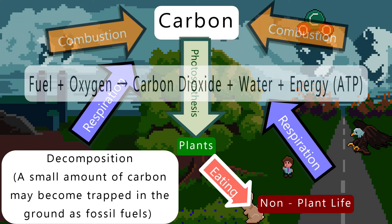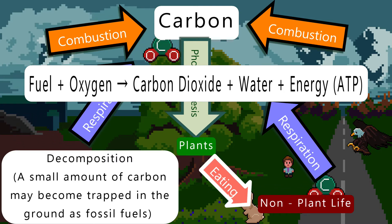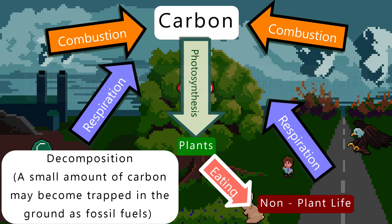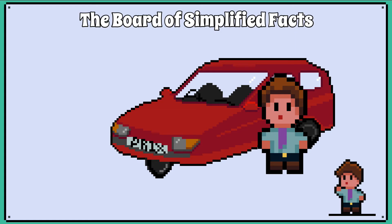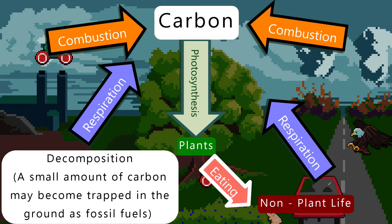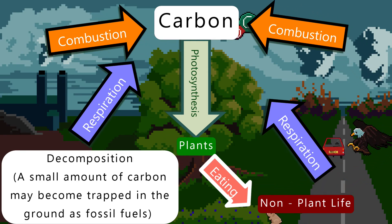Finally, combustion, where carbon molecules are reacted with oxygen and release carbon dioxide back into the atmosphere. Some of this is natural, where combustion occurs during wildfires for example. Human activities such as burning fossil fuels for producing electricity and powering cars also release carbon dioxide back into the environment via combustion. In the next lesson we will look at the nitrogen cycle.